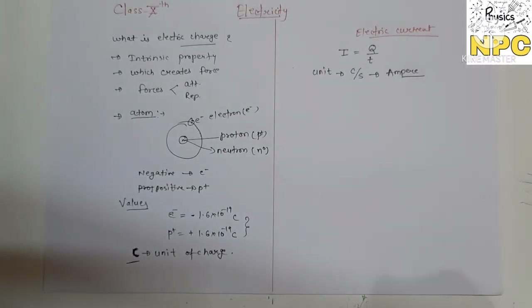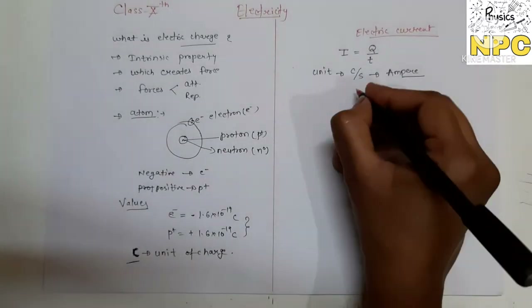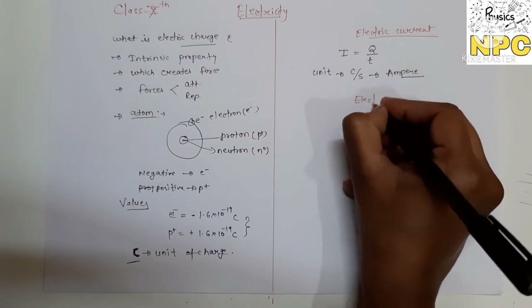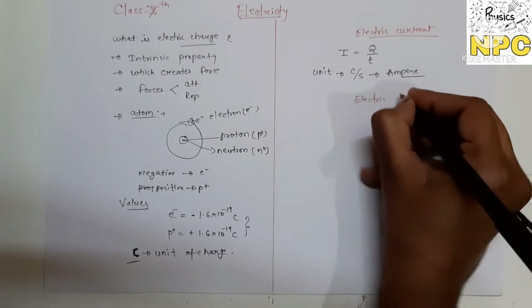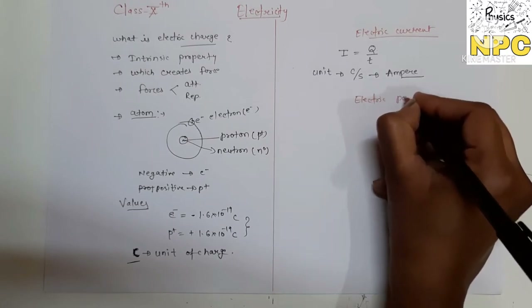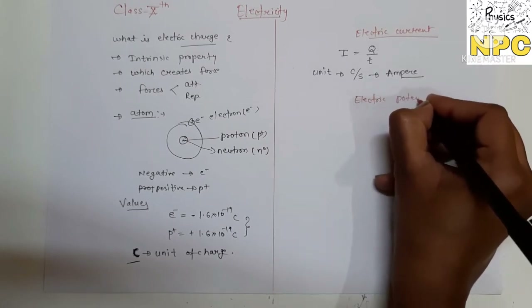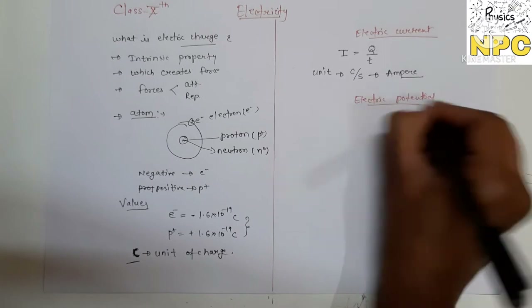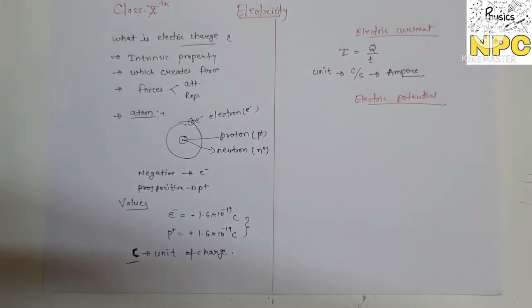Now the next topic is electric potential. What is electric potential? Simply, if you have a positive charge at a point A, it will create an electric field around it. If you bring another particle to point B, a force will be created.